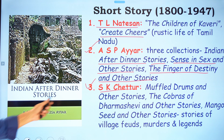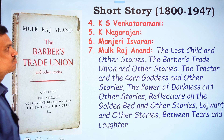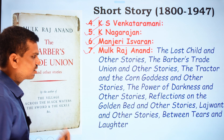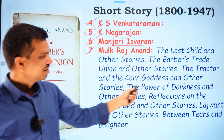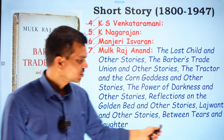Other short story writers include K.S. Venkatramani, K. Natarajan, and Manjeri Isvaran, a woman short story writer. Mulk Raj Anand composed many short story collections: The Lost Child and Other Stories, The Barber's Trade Union and Other Stories, The Tractor and the Corn Goddess and Other Stories, Power of Darkness and Other Stories, Reflections on the Golden Bed, Lajwanti and Other Stories, and Between Tears and Laughter.